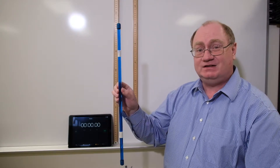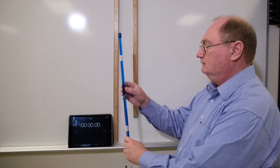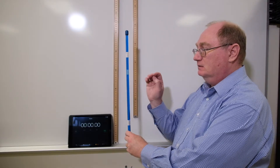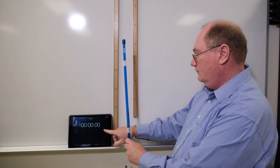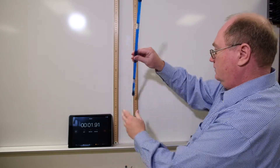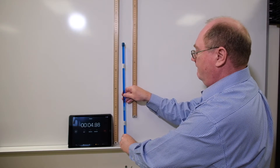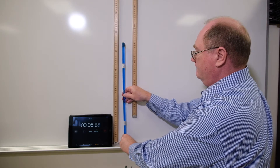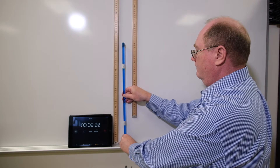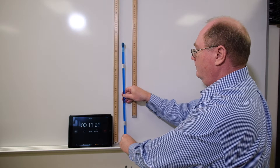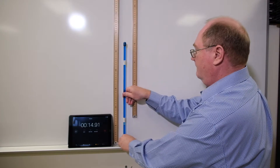The measurements for distance are the same for the red tube, except this bubble obviously travels at a different speed. Starting the clock for you. First turn. Second turn.